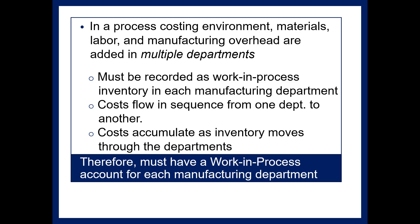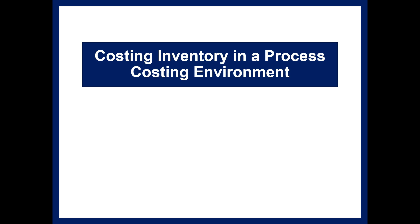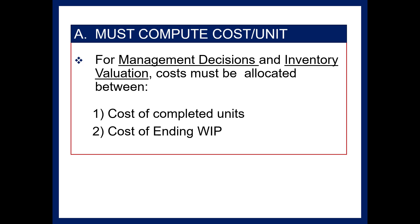We have a separate work in process account for each manufacturing department. So Campbell's Soup Company would have a work in process inventory — cutting, a work in process inventory — canning, and so on. Let's look at how we cost inventory in a process costing environment. You will need to compute a cost per unit in order to make management decisions and prepare your financial statements.